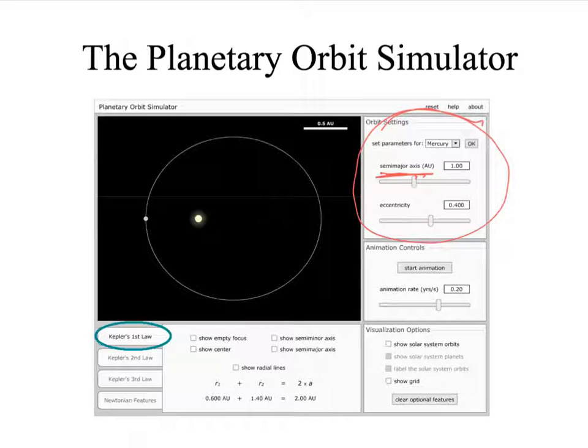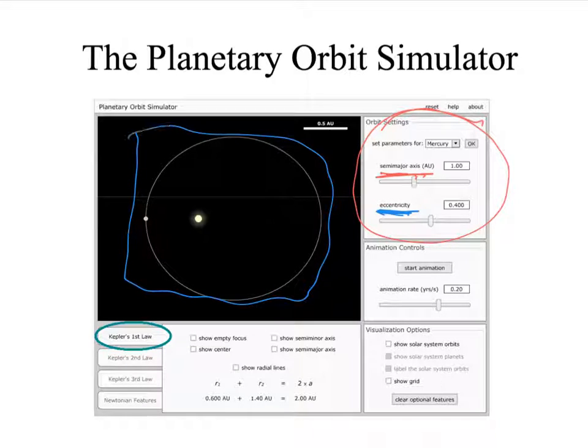The other orbit parameter that you can control is the eccentricity here which controls how smushed the ellipse is, if it's closer to being a circle or closer to being a line. So look at the ellipse that's drawn in the simulator here and you can see it has an eccentricity of about 0.4 and it looks vaguely circular but not quite circular.